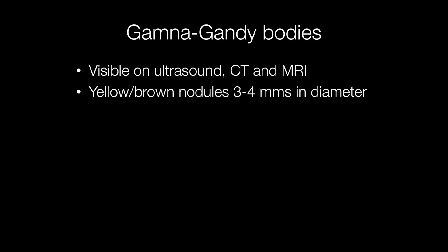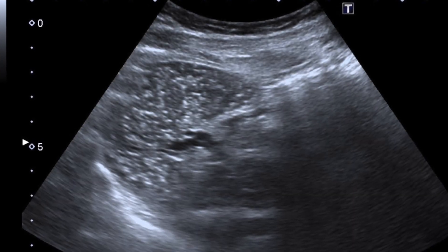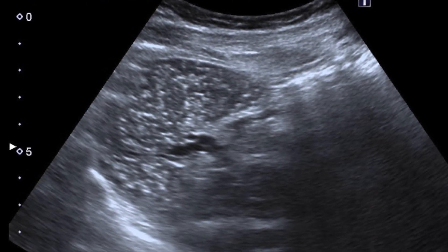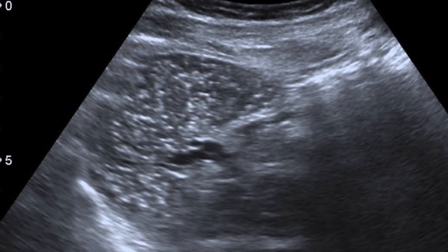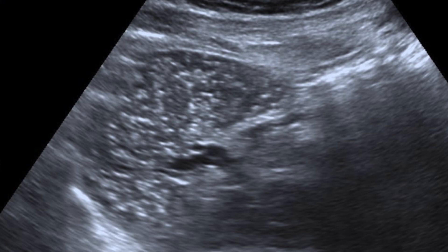Gamna-Gandhi bodies may be visualised on ultrasound, CT scans and MRI. Grossly, they are yellow-brown nodules, 3-4 mm in diameter, resembling tobacco flecks. This is an ultrasound scan of the spleen and you can see multiple white spots — these are Gamna-Gandhi bodies.